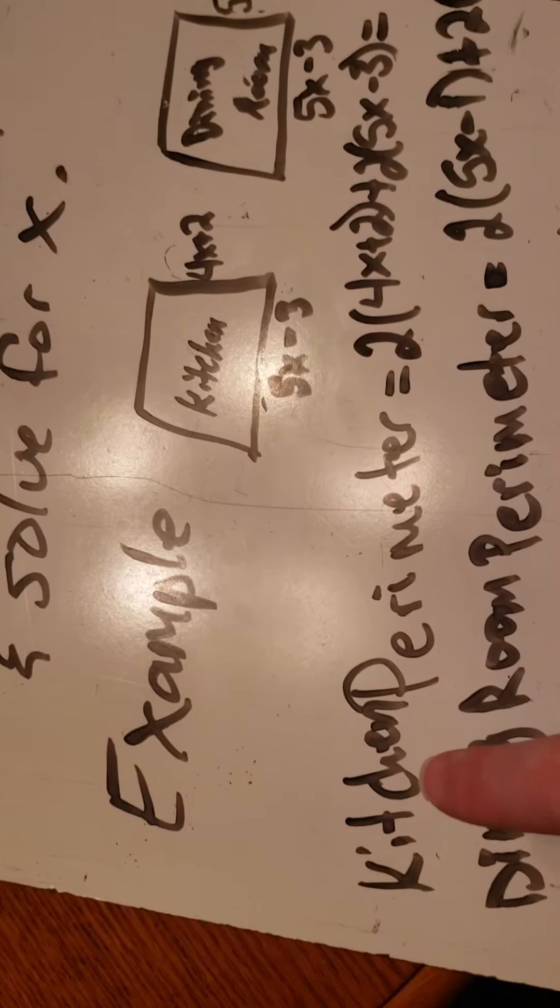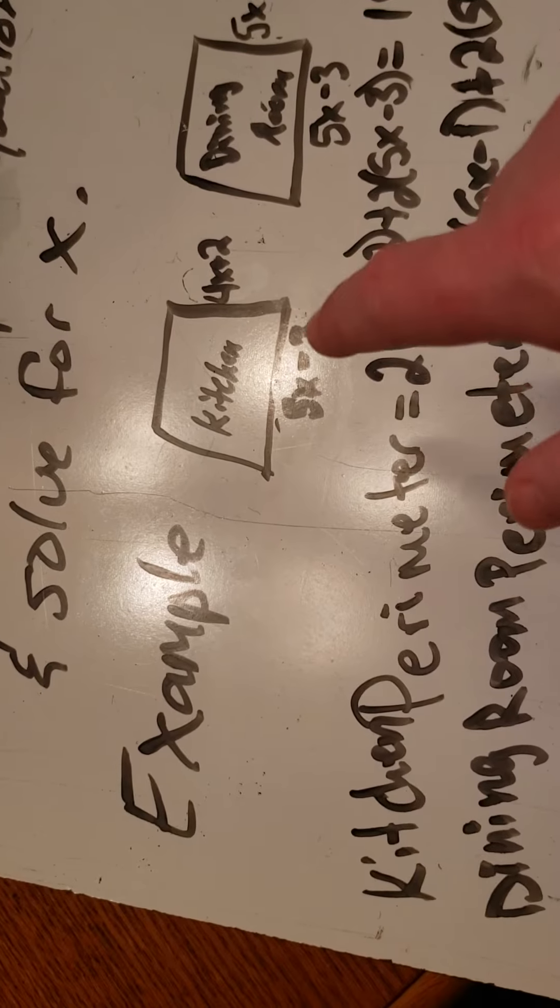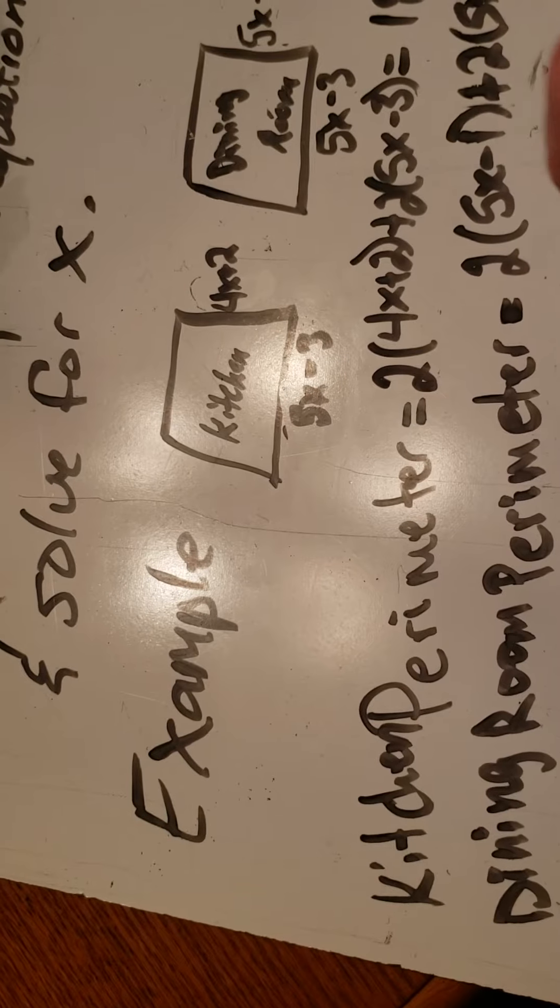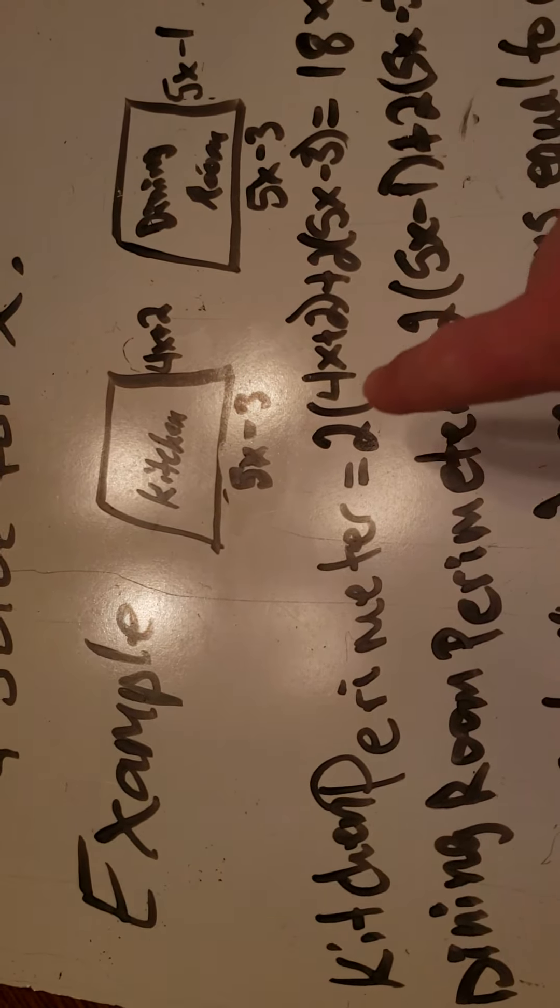First I'm going to find the perimeter of the kitchen. So it's twice the length plus twice the width. And again, it doesn't matter which one of these, the 5x minus 3 or the 4x plus 2, that you use as length and width. Because multiplying you can do in any order, it's going to end up being the same thing.